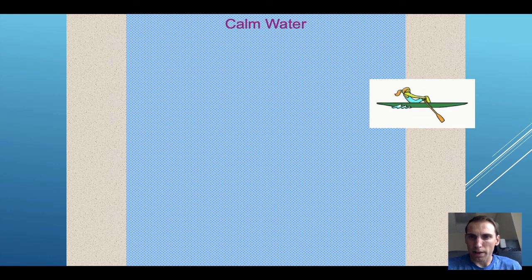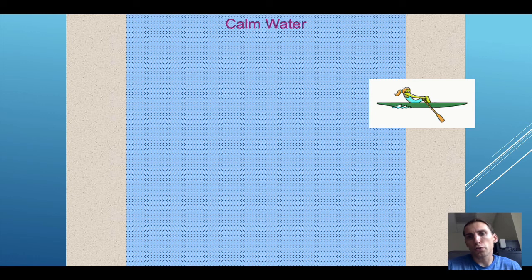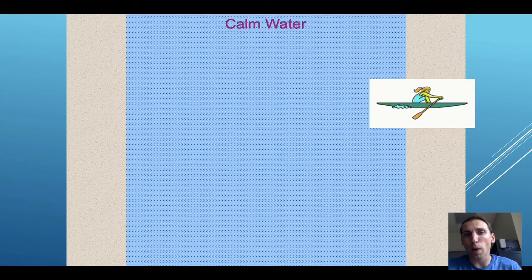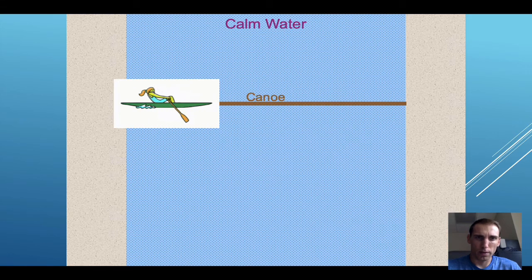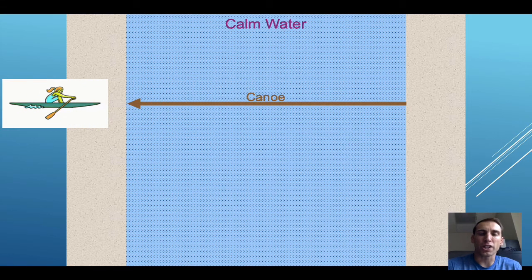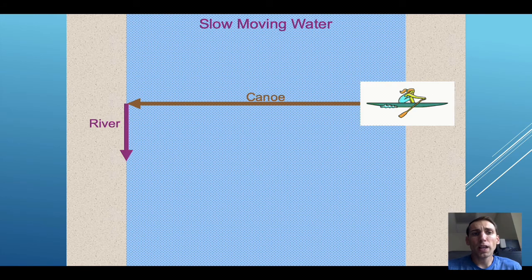You may wonder in what context you would ever add vectors together. A common physics problem is something called a riverboat problem, where a boat travels across a river to the side while there's some current pushing that boat down as well. So let's say we have this canoe traveling across calm water. Obviously, the boat would just move in the direction that it's facing with whatever speed it's generating.